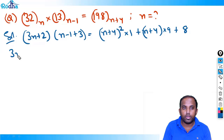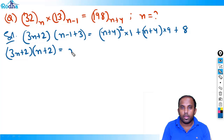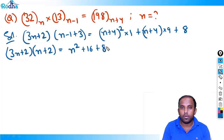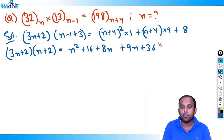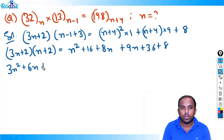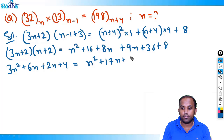This becomes (3n+2)(n+2) = n²+8n+16 + 9n+36 + 8 = n²+17n+60. Expanding the left side: 3n²+6n+2n+4 = 3n²+8n+4. So 3n²+8n+4 = n²+17n+60.